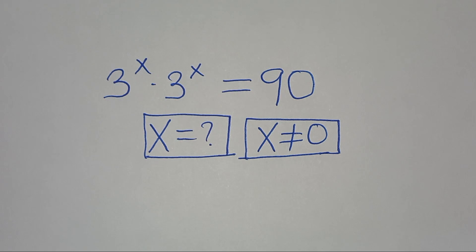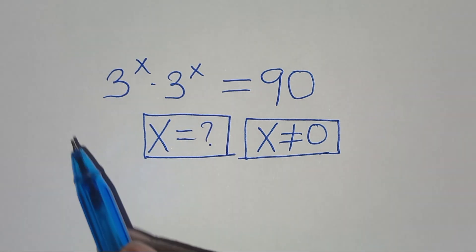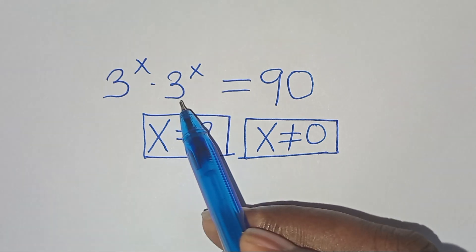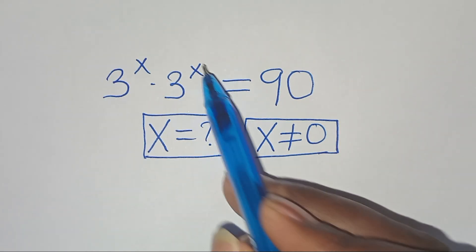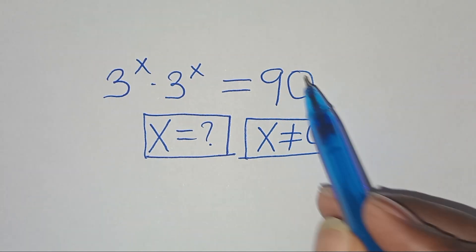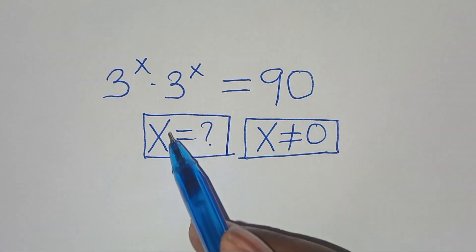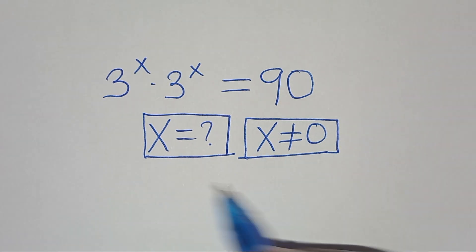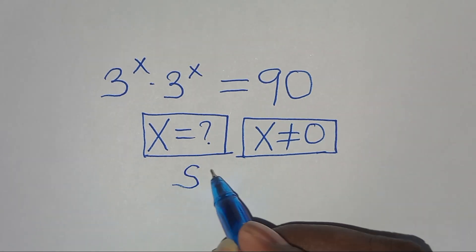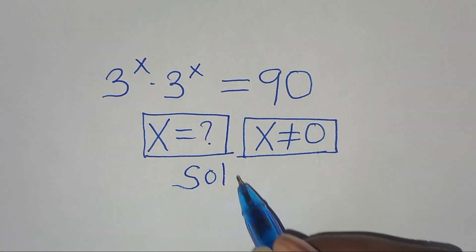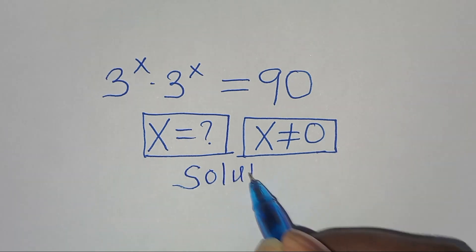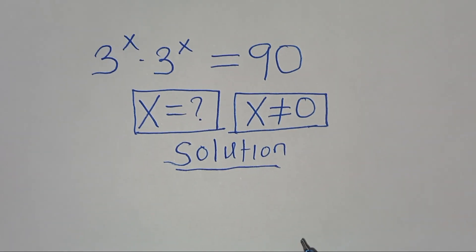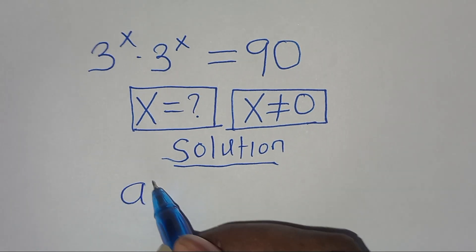Welcome, everyone. Let's solve this exponential equation: 3 to the power of x times 3 to the power of x equals 90. What is the value of x, given that x is not equal to 0? Let's provide a solution. This exponential equation is in the form of a to the power of n times a to the power of m.